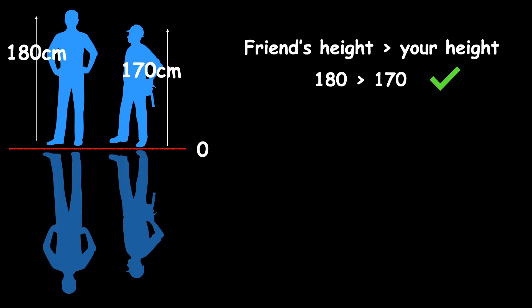Then you could measure your reflections with negative numbers. So you could say your friend is negative 180 centimeters or his reflection has a length of negative 180 centimeters and your reflection has a length of negative 170 centimeters. How could you represent those reflections as an inequality?